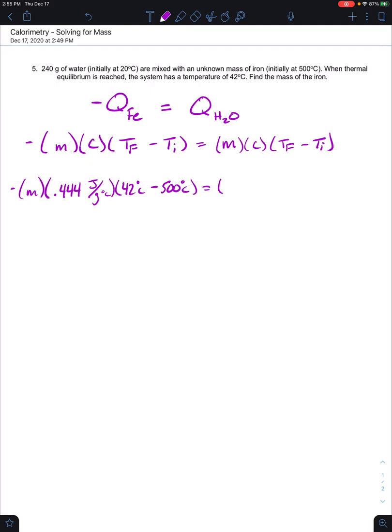is equal to the mass of water, 240 grams, times the heat capacity of water, that's 4.184 joules over grams degrees Celsius. Although it's not given in the question, you will certainly want to remember that. Then the final temperature of water is 42 degrees Celsius, while the initial temperature is 20.